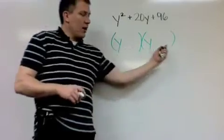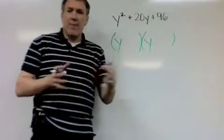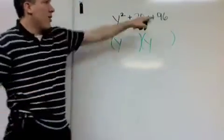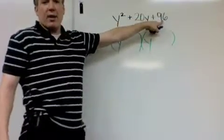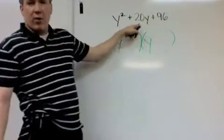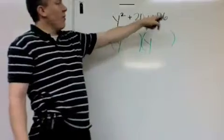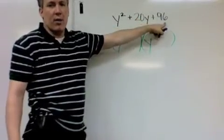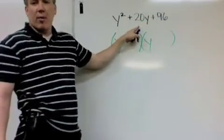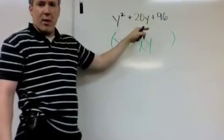The two numbers that I now write in these two spots here with the y come from the two numbers that multiply to 96 and add to 20. Again, they have to multiply to this end number and add to the number in front of the variable that's to the first power here.